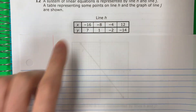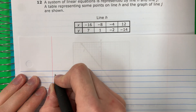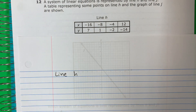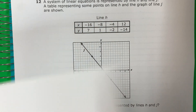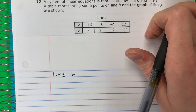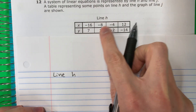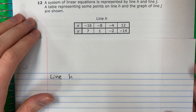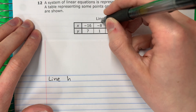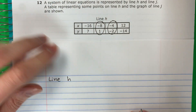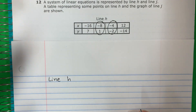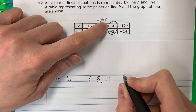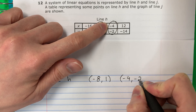We're going to start with line H. To do an equation in slope-intercept form, I need two points — two ordered pairs. I can pick any pair from the table. I will pick negative eight, one and negative four, negative two.